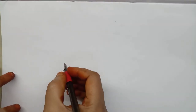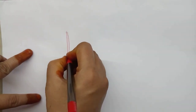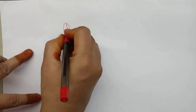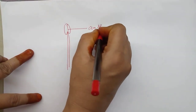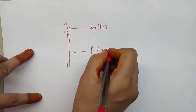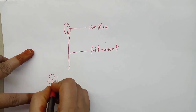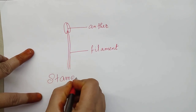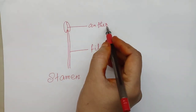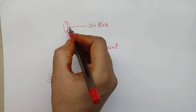Each stamen possesses an anther and a filament. In this anther only, the pollen grains are present — they are developed here and present in this anther only.